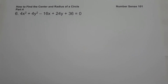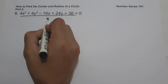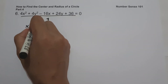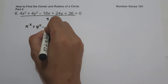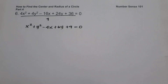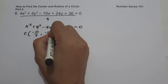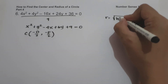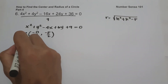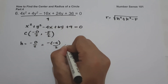On example number 6, we have 4x squared plus 4y squared minus 16x plus 24y plus 36 equals 0. All terms are divisible by 4, so we divide the whole equation by 4: x squared plus y squared minus 4x plus 6y plus 9 equals 0. To find h: negative d over 2, where d is negative 4, so this is negative times negative 4 over 2, and that is 2.